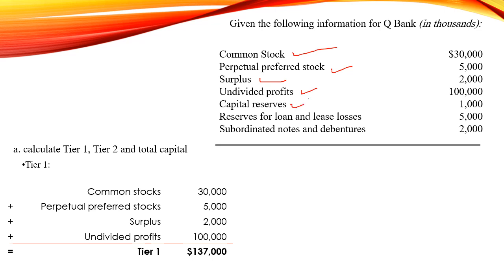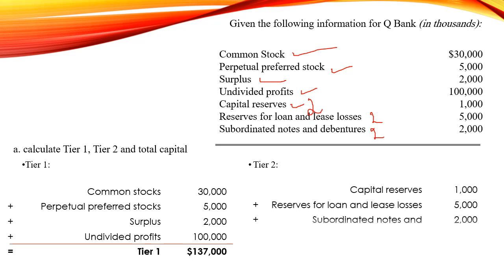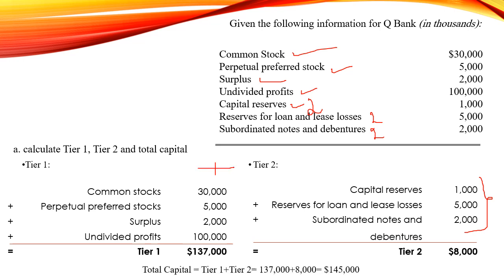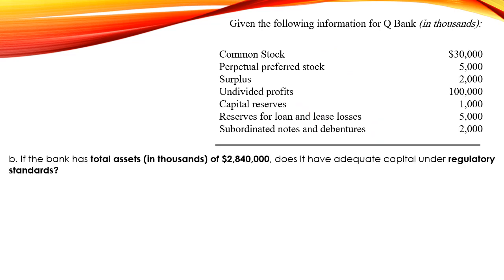Regarding Tier 2 capital, reserves are considered as Tier 2, and reserves for loan losses as well as subordinated notes and debentures are also included. Tier 2 will be the summation of these three accounts, equal to $8,000. The total capital is the summation of Tier 1 plus Tier 2, so $137,000 plus $8,000 equals $145,000. Now let's move to question B.